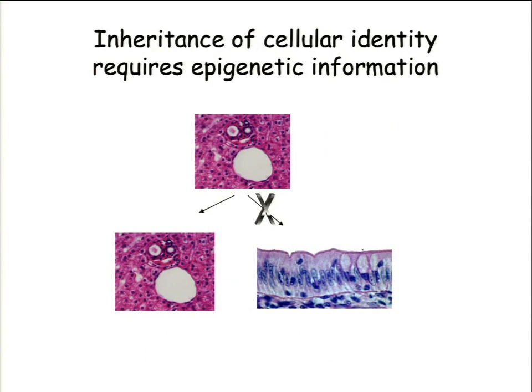My lab is generally interested in the process of epigenetic inheritance. Since there are so many different versions of this word floating around, I'll define my term. Epigenetic inheritance — I use it in the Holiday sense. Something is epigenetically heritable if you have two different phenotypes that are mitotically maintained without any change in underlying DNA sequence.